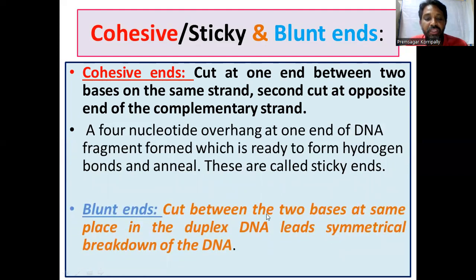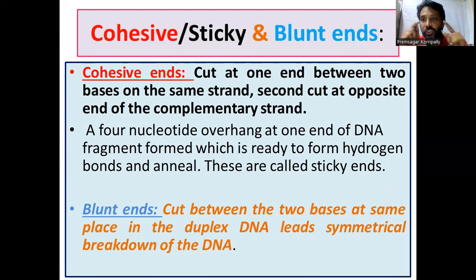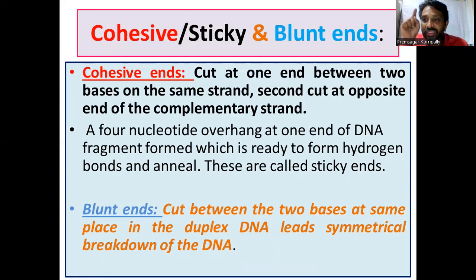Blunt ends: the cut is between two bases at the same place in the duplex DNA, leading to symmetrical breakdown of the DNA. In cohesive ends, two phosphodiester bonds break at different, opposite ends — that's why they form single-strand overhangs. But in blunt ends, two phosphodiester bonds break at the same place in the duplex DNA, leading to symmetrical breakdown of the DNA.